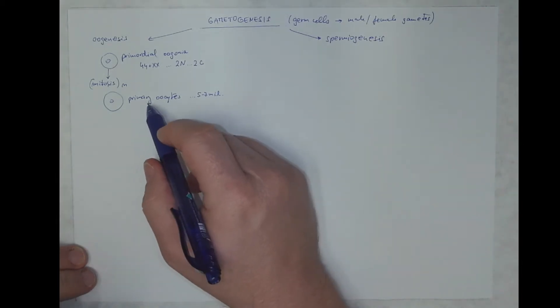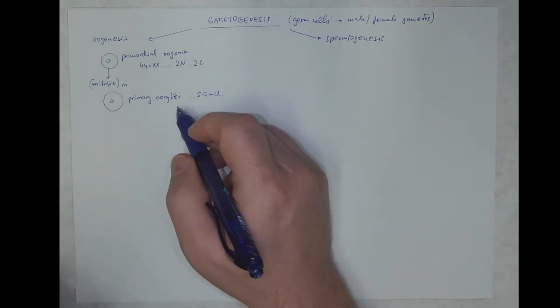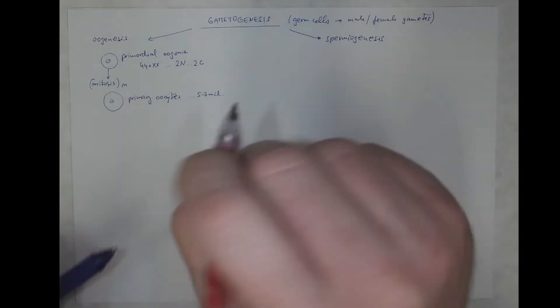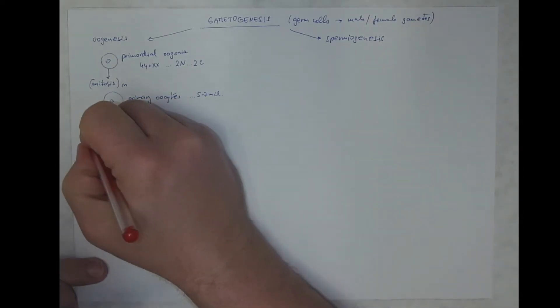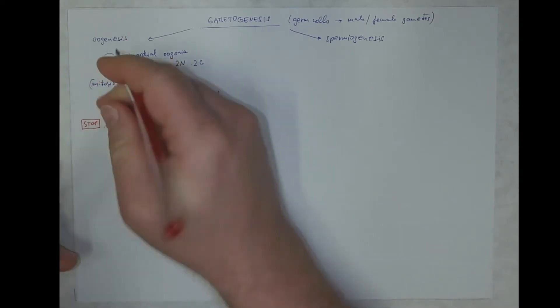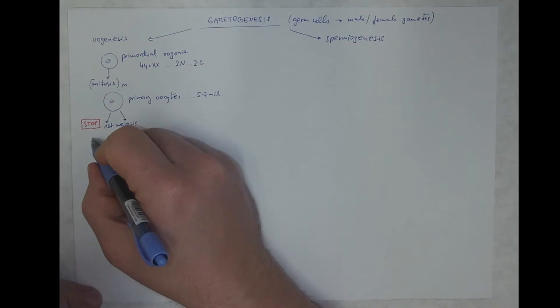Now, these have the same nuclear content, but their further development is arrested. They are entering the first meiotic division, but they are arrested, and once they finish the first meiotic division they become secondary oocytes.